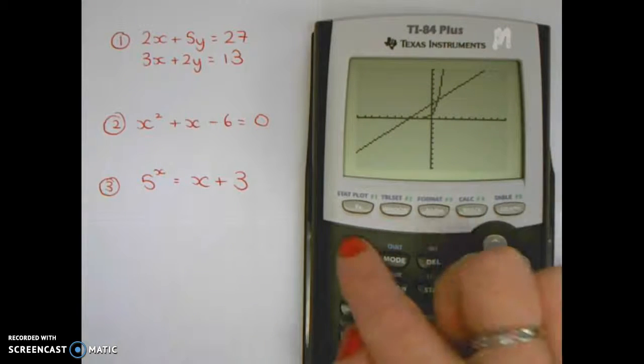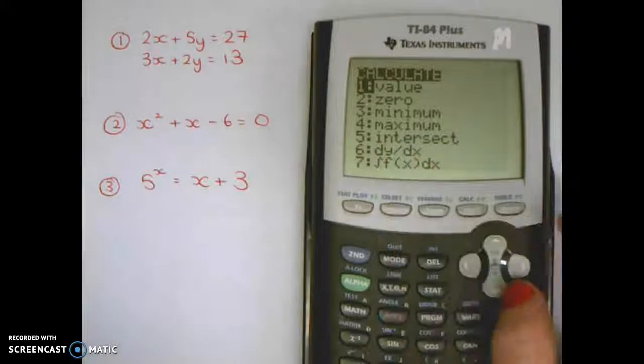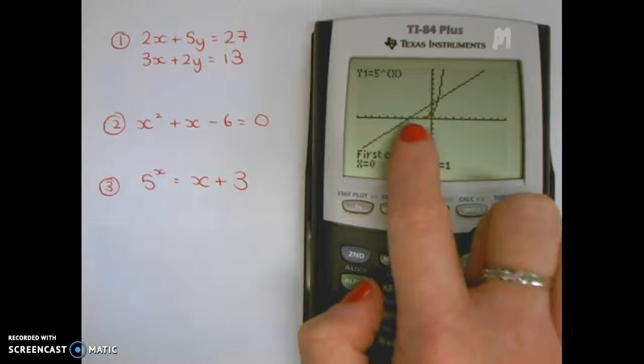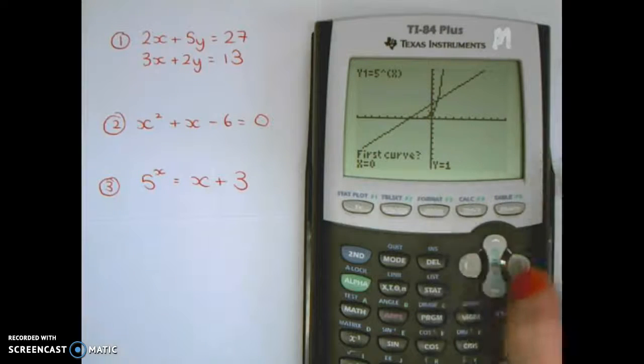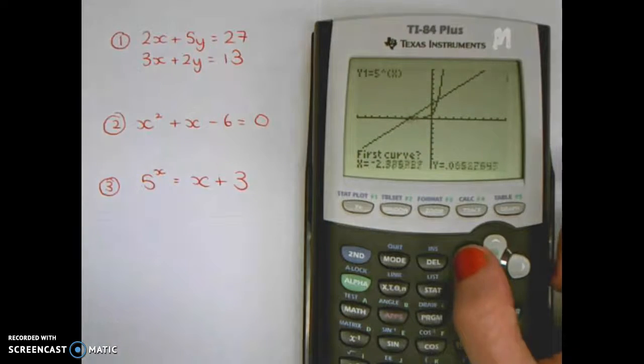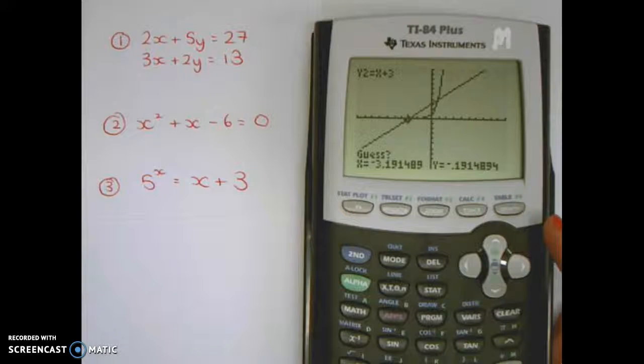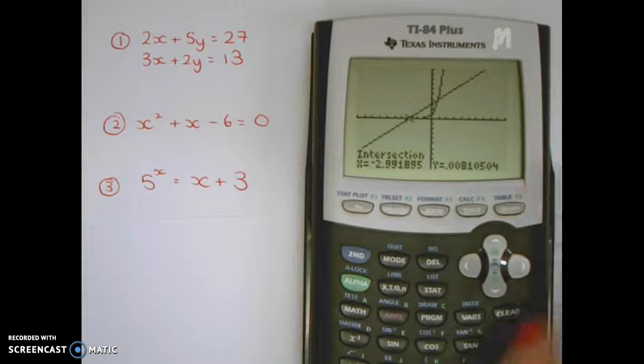Go to calc and intersection to find where they intersect. Let's see if there's one down here. I think there should be a crossing point along here. First curve, I want the crossing point around there. Second and guess. Press enter, enter, enter when you get to the right place. It tells us there's a solution at minus 2.29.